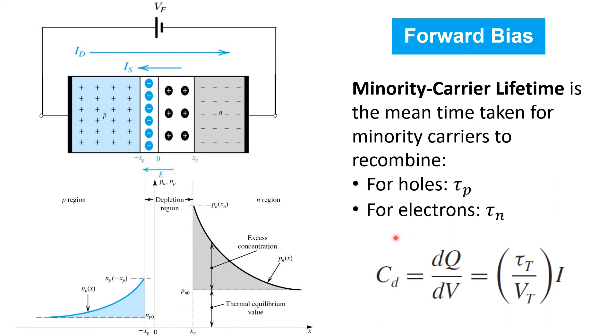Thus, the so-called diffusion capacitance is a strong function of the minority carrier lifetime, which is the mean time taken for minority carriers to recombine. For holes, we use the subscript P, for electrons, the subscript N. The subscript T captures both the P and N minority charge carriers.